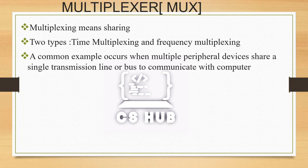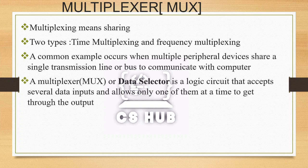When multiple peripheral devices share a single line, we can use time division to access it — this is called time multiplexing. Using this concept, a multiplexer — also called a data selector — is a logic circuit, specifically a combinational circuit. A multiplexer accepts several data inputs and allows only one of them at a time to get through to the output.